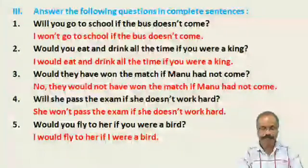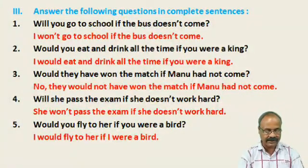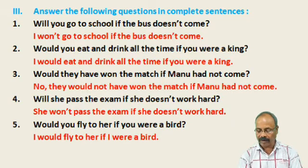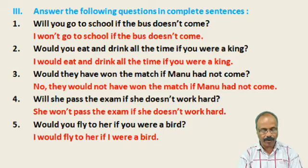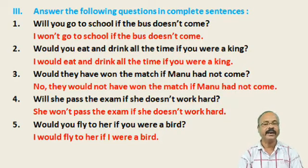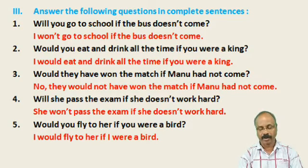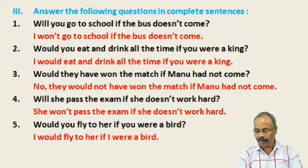Part three: Answer the following questions in complete sentences. Question 1: Will you go to school if the boss does not come? Answer: I won't go to school if the boss does not come. Number 2: Would you eat and drink all the time if you were a king? Answer: I would eat and drink all the time if I were a king. Number 3: Would they have won the match if Manu had not come? Answer: No, they would not have won the match if Manu had not come.